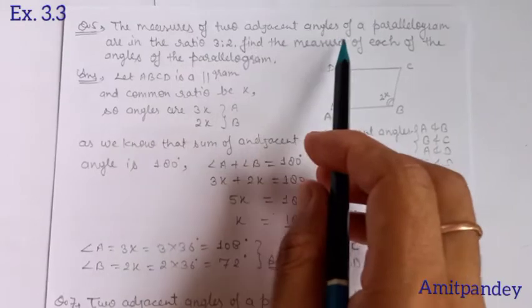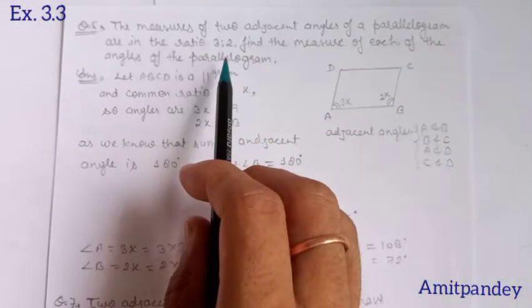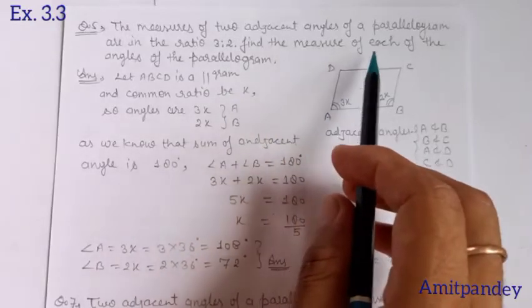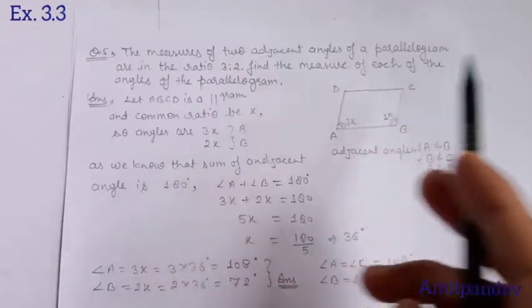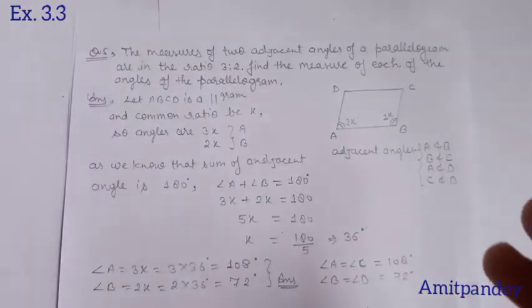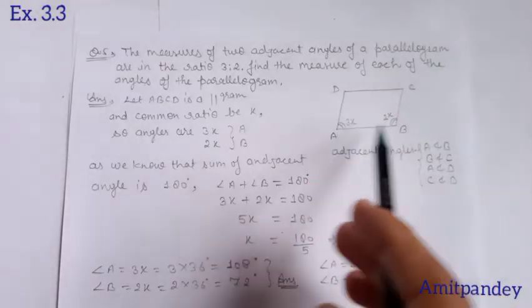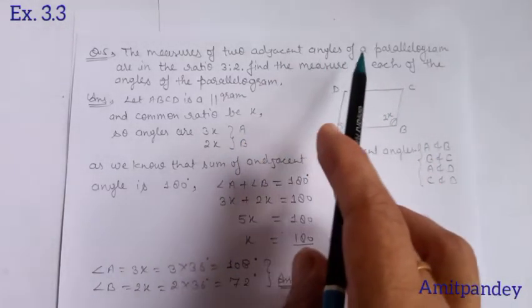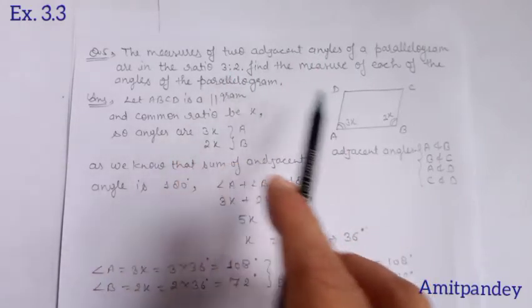The measure of two adjacent angles of a parallelogram are in the ratio 3:2. Find the measure of each of the angles of the parallelogram. As you know what we mean by parallelogram — which we already studied in previous sessions. Here, ABCD is the parallelogram. According to the question, the adjacent angles are in ratio 3:2.